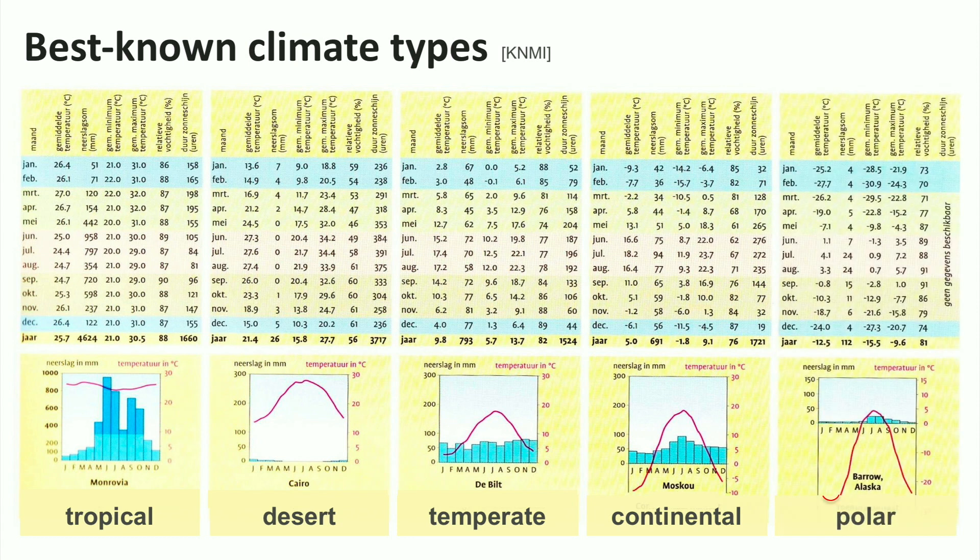And finally, we see the polar climate, with the lowest temperatures of course, but with an enormous difference between winter and summer. There is very little precipitation, mostly snow.